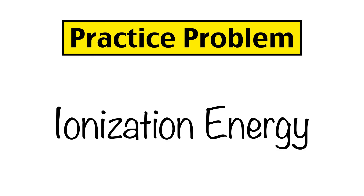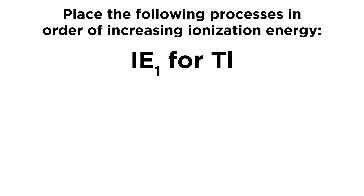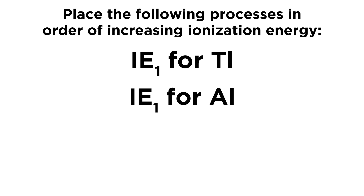Let's go through a practice problem regarding ionization energy. The question is: place the following processes in order of increasing ionization energy. The first process is IE1 for thallium — the first ionization energy for thallium, meaning the energy associated with removing the first electron from neutral thallium. The next is IE1 for aluminum, the first ionization energy for aluminum.